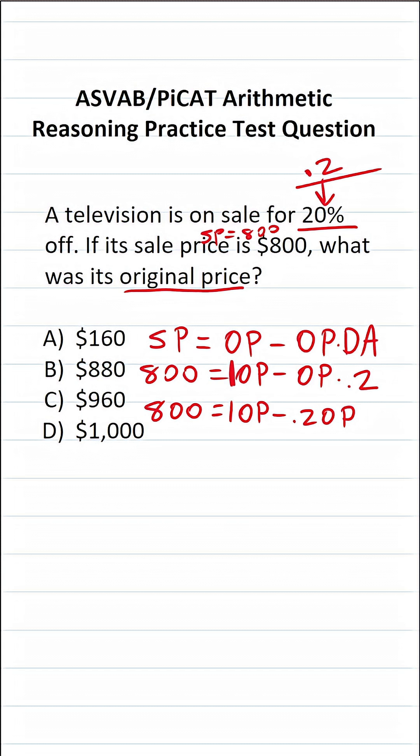So on this right hand side of the equation, we have 1 minus 0.2. Let's go ahead and work that off to the side. What is 1 minus 0.2? I know many of you could do that mentally, but let's do it the old fashioned way here.